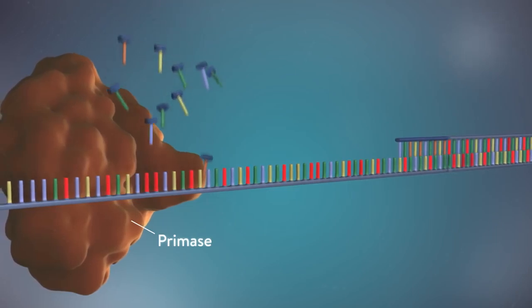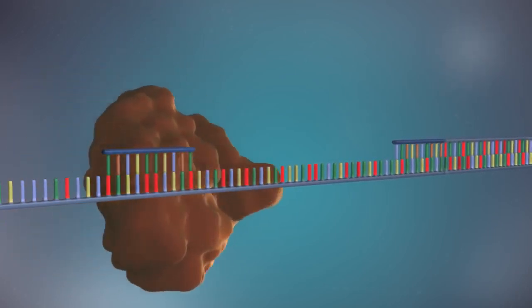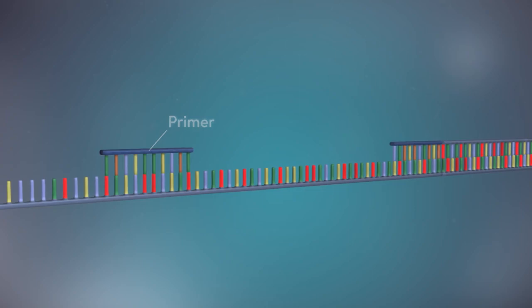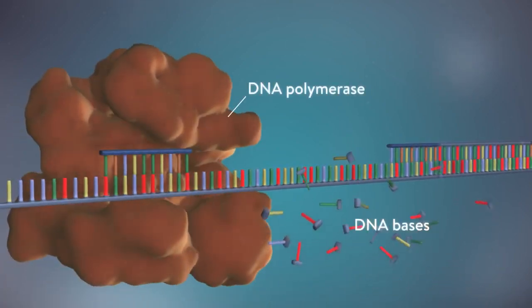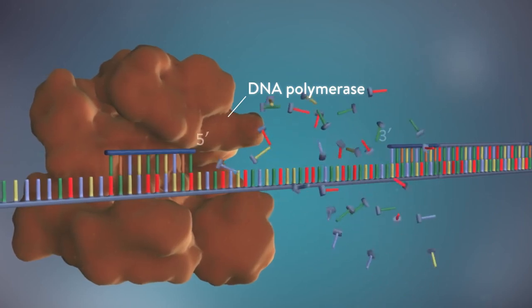Each fragment is started with an RNA primer. DNA polymerase then adds a short row of DNA bases in the 5' to 3' direction.